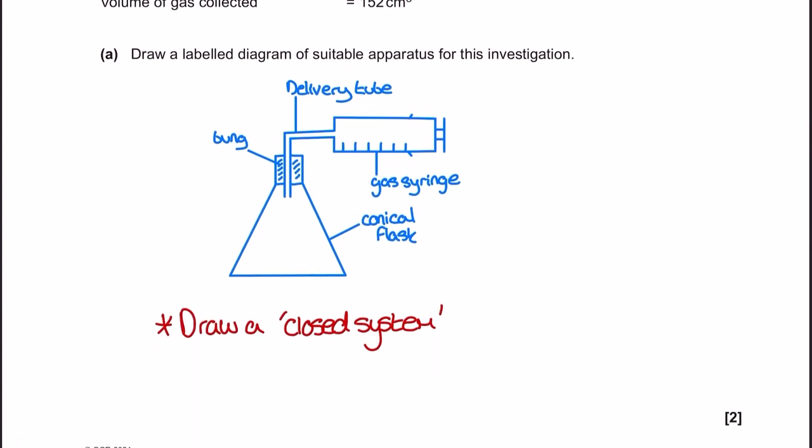In part A, we need to draw a gas collection setup. If you don't use a gas syringe like I've done here, you need to draw an inverted measuring cylinder in a basin of water. No matter what you do, you must include labels — without labels it's just a picture and there are no marks for pictures in A-level chemistry exams. Always go all out with labels; every piece of kit gets labelled. Make sure there are no gaps in your pathway and you've got a nicely closed system all the way through to the gas syringe, with the bung shown in the top of the conical flask.